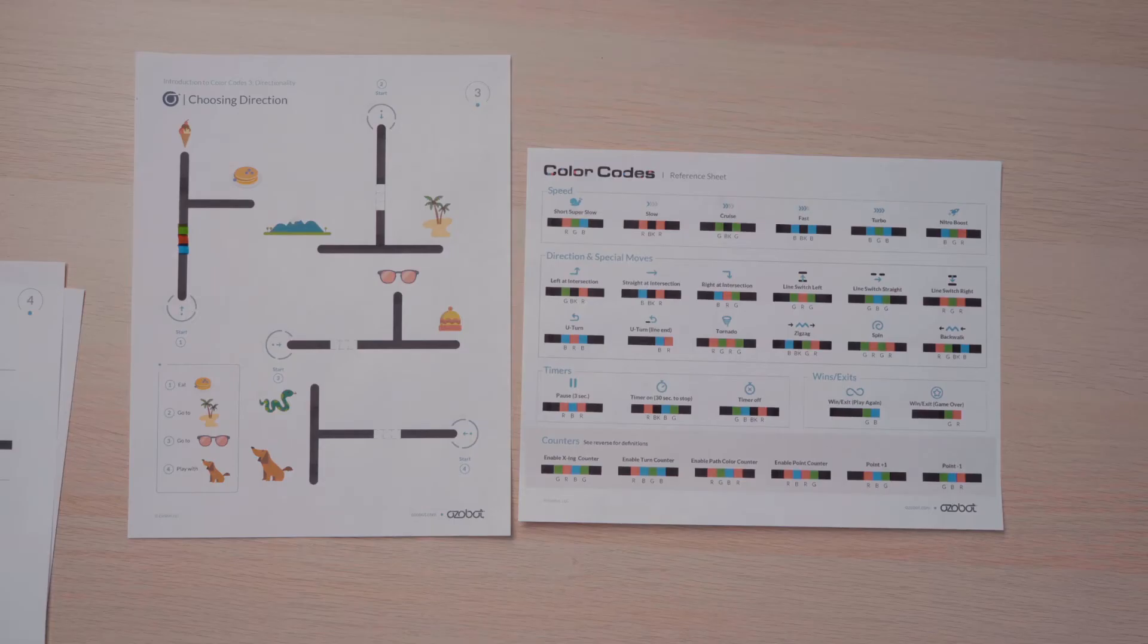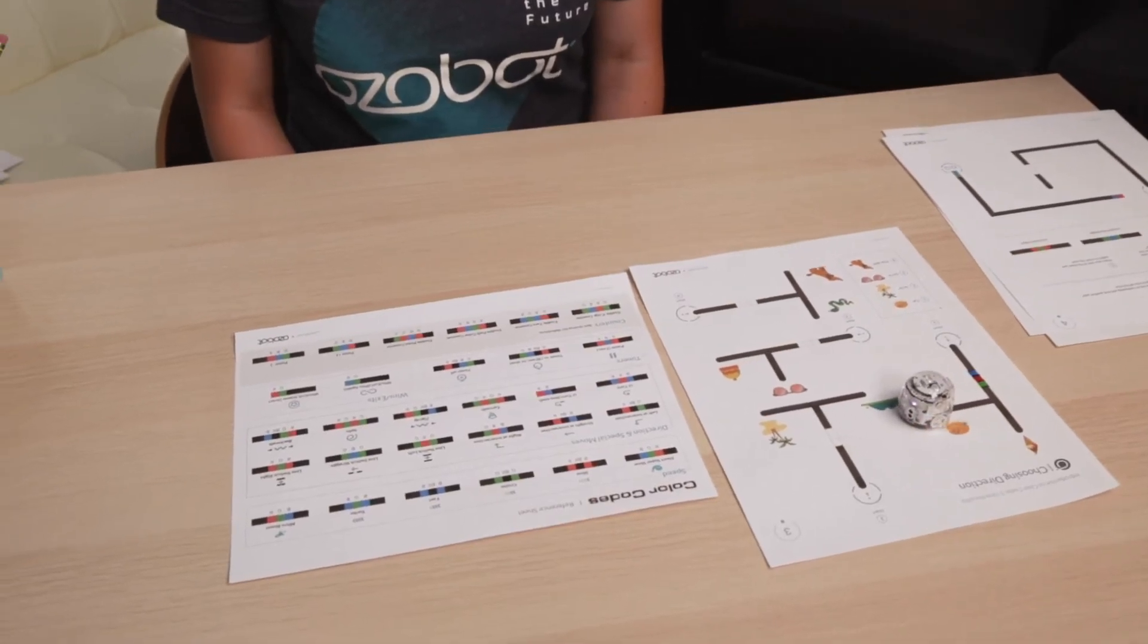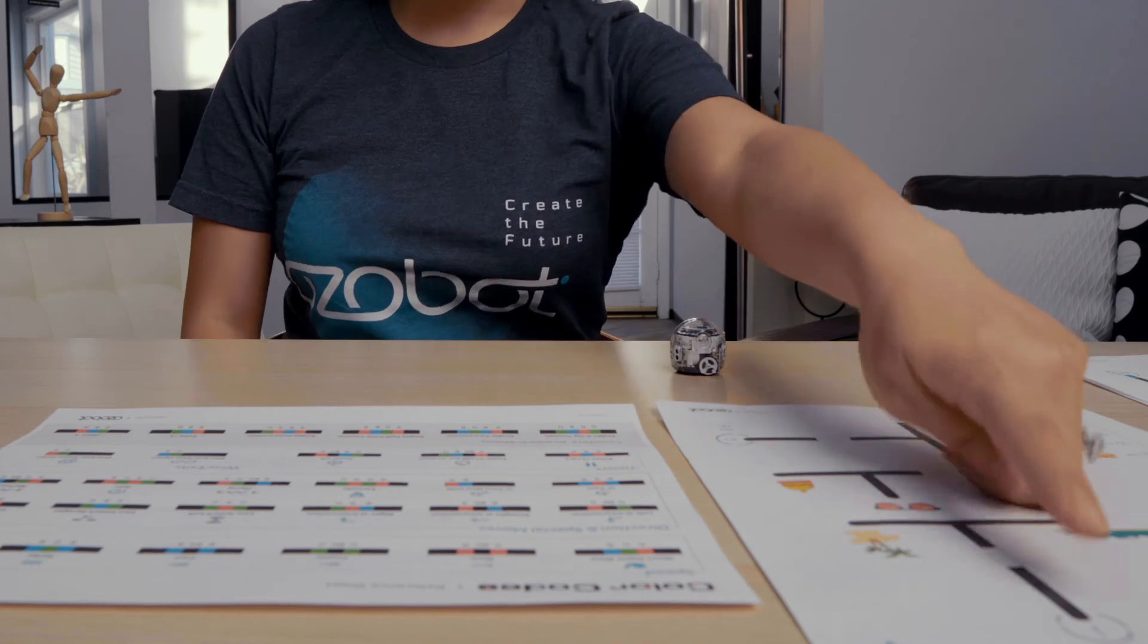To test my code, I'll place my bot on start, have it read the color code, and see if it makes it to the pancakes. Nice work! We made it! Let's try the second one together.